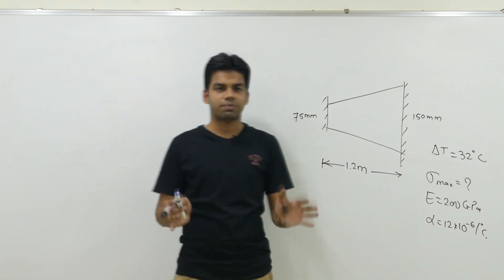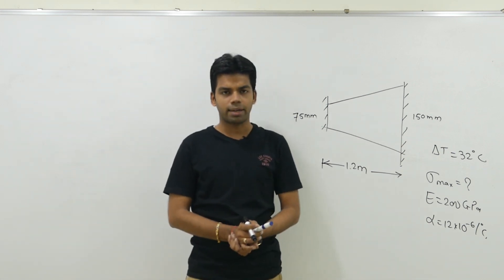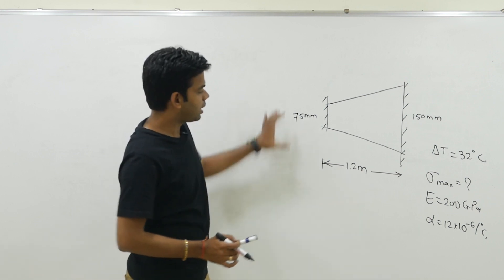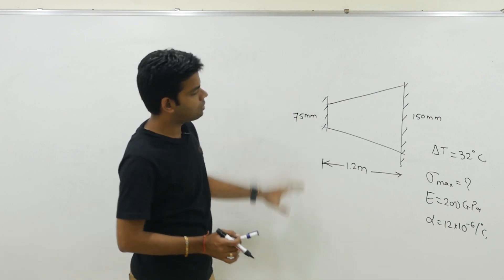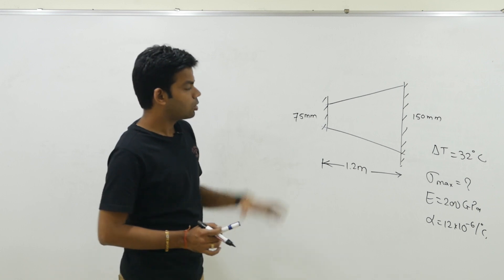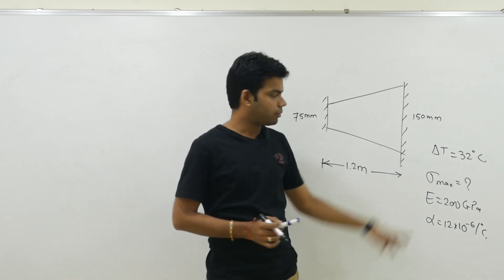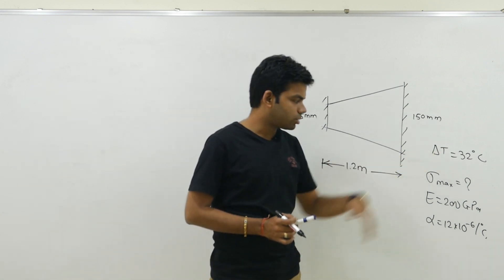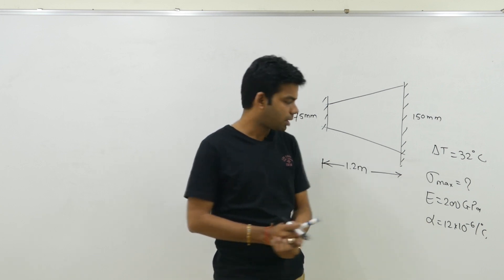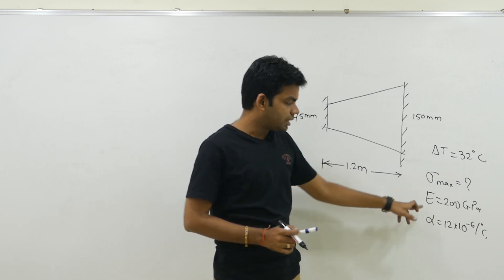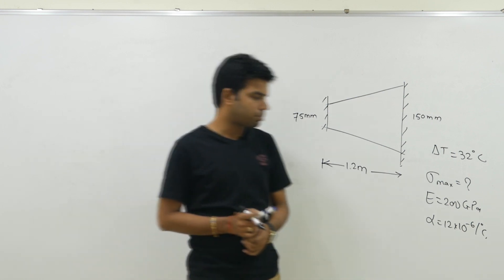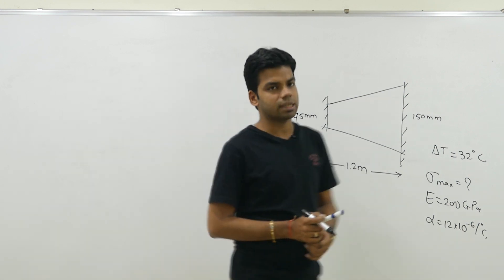We have a tapered bar fixed at both ends with a circular section. At one end the diameter is 75 mm and at the other end the diameter is 150 mm. The total increase in temperature of this bar is 32 degrees centigrade. We have to find the maximum stress developed in the bar. E is 200 GPa and alpha is 12 × 10⁻⁶ per degree centigrade.